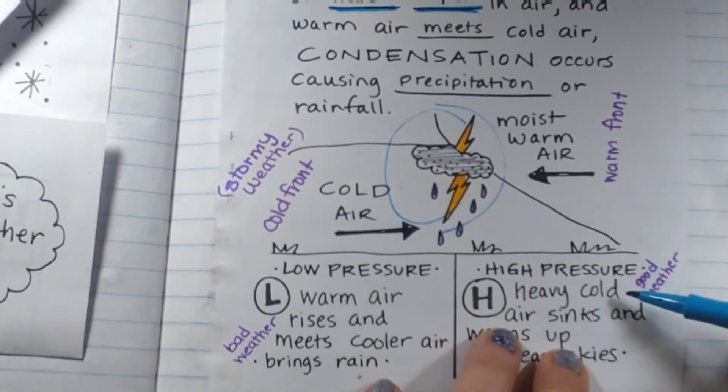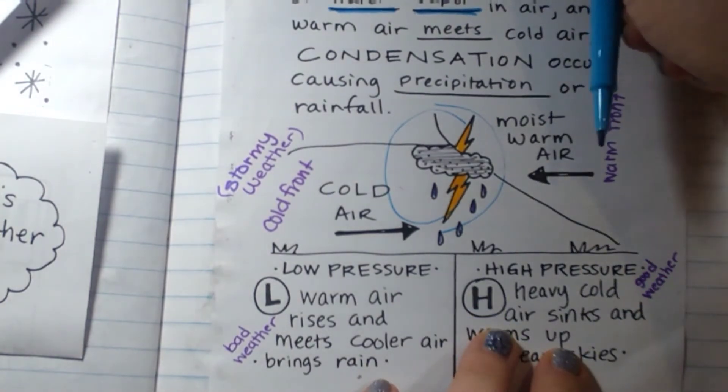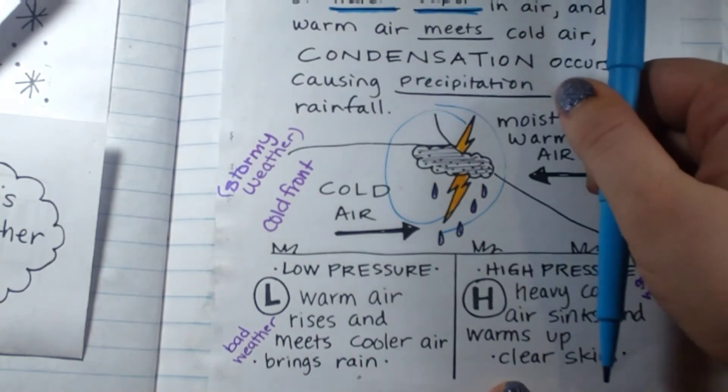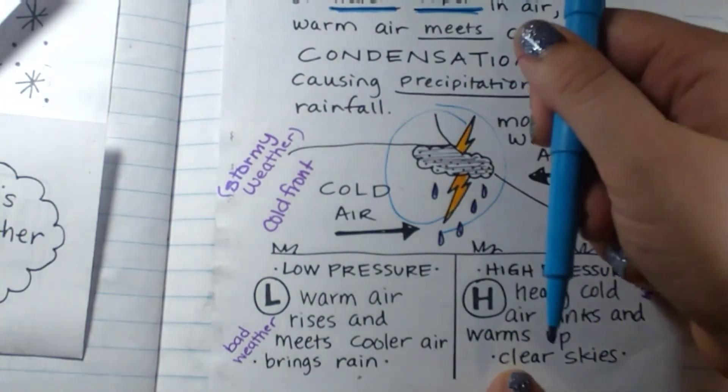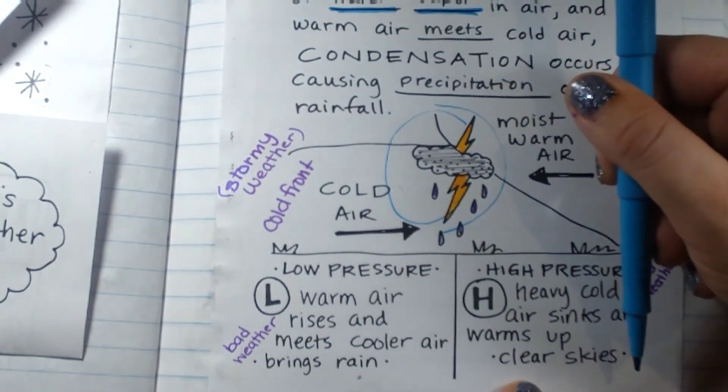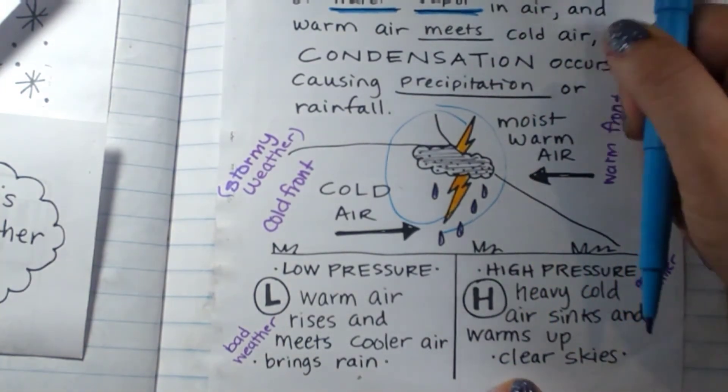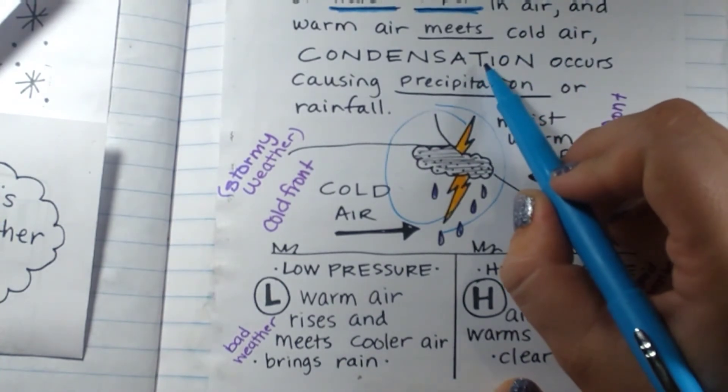A high pressure system is when the cold air goes down and warms up. So when cold air warms up, it is clear because cold air warming up does not cause condensation.